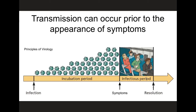The other important aspect of transmission is timing — and in particular, the timing of transmission relative to the appearance of symptoms. This graphic illustrates two important epidemiological periods. The first is the incubation period, which is the period of time between when a host becomes infected and the appearance of symptoms of infection. During this period, the infected individual will likely have no idea that they're infected, and yet the virus is actively reproducing within that individual's cells. The other important period is the infectious period, which is the period of time during which an individual is shedding virus that can be transmitted to others. For some viruses, like Ebola virus for example, these two periods are mutually exclusive.